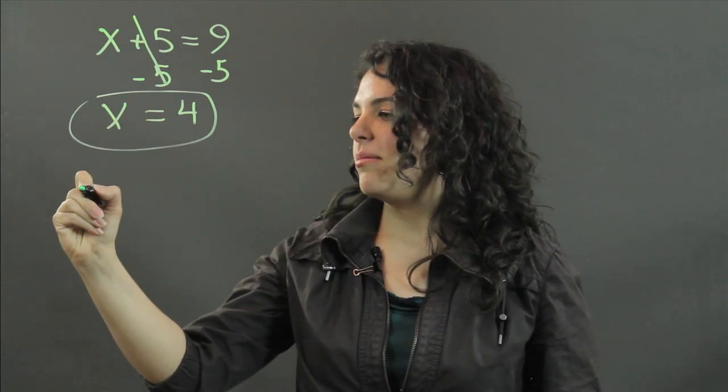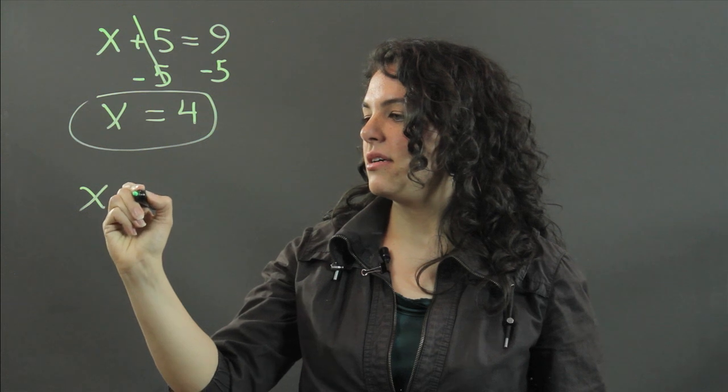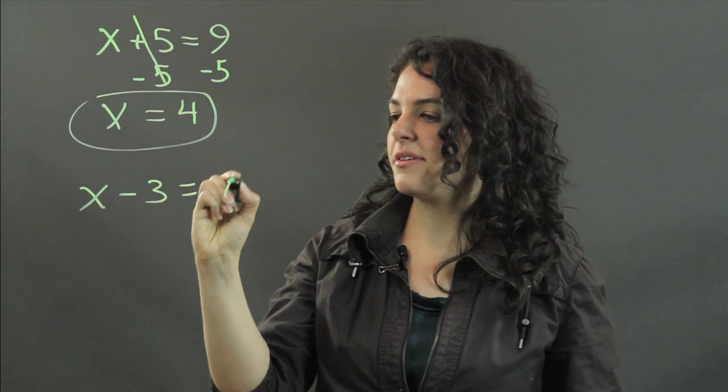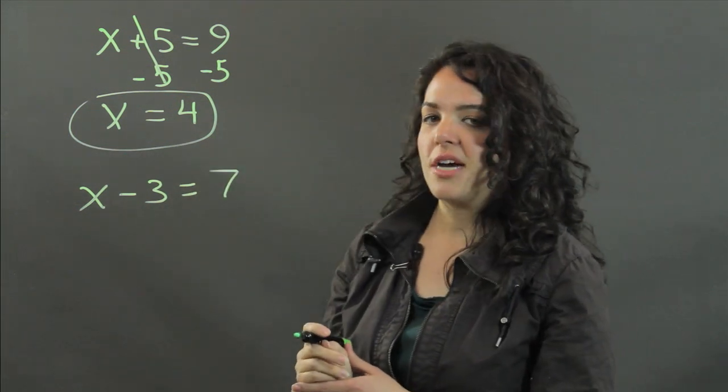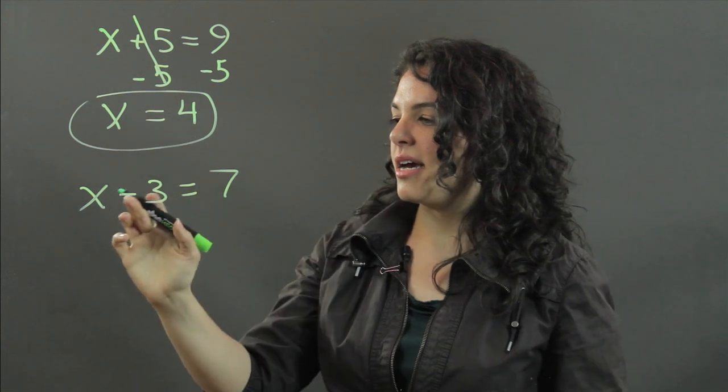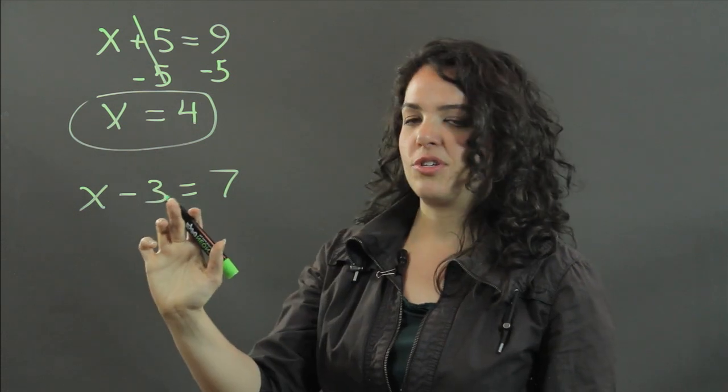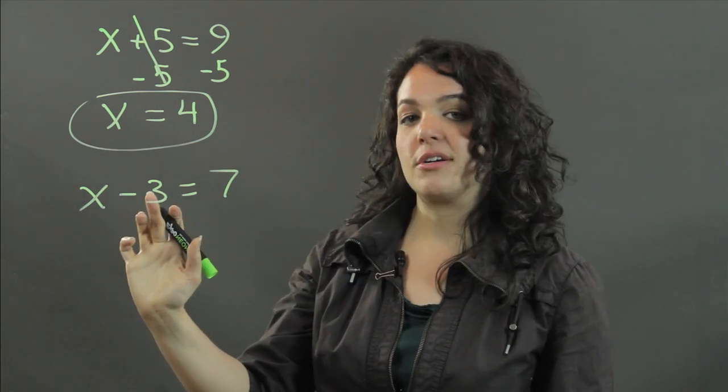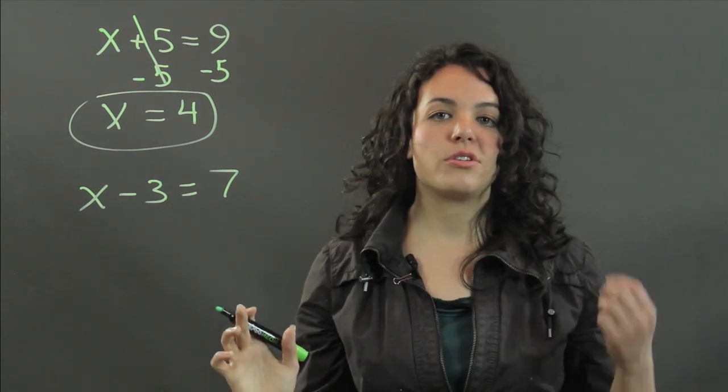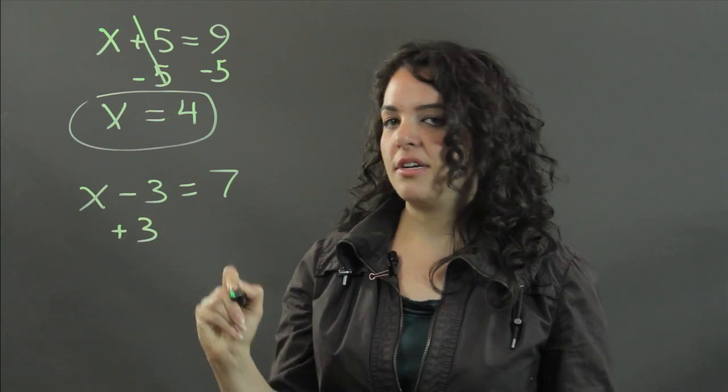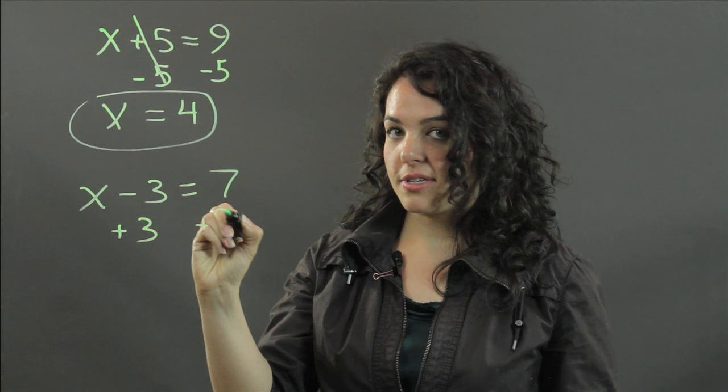If you had another problem, like x minus 3 equals 7, we look at the operation between x and the number that we want to move over to the other side, which is 3 in this case. And we see that we are subtracting. The inverse of subtracting is addition. We will add 3, again, to both sides.